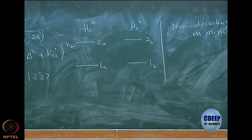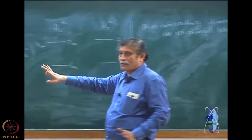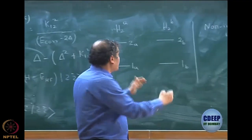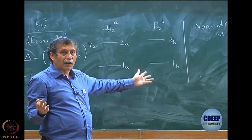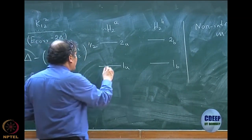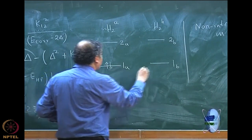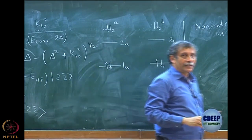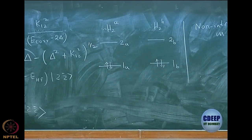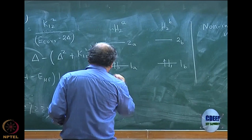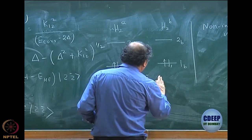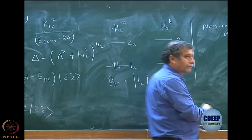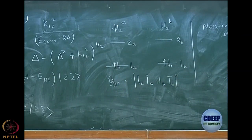I am doing a Hartree-Fock for the non-interacting regime. It is an H4 system, so 4 electrons in 1A and 1B. Psi Hartree-Fock will be |1A, 1A bar, 1B, 1B bar>. Of course everything is a determinant — I am just writing the diagonal. When writing without bar it means alpha spin orbital is attached; with bar, beta spin orbital. 1A, 1B, 2A, 2B are spatial orbitals, but inside the determinant they carry spin.